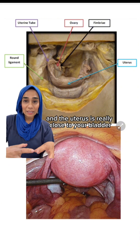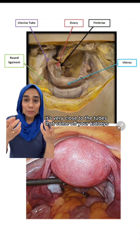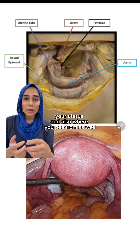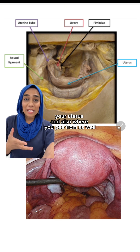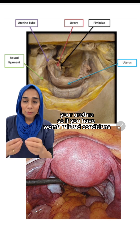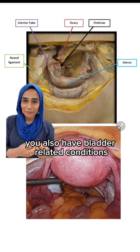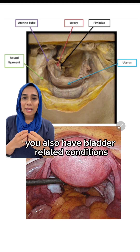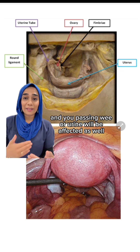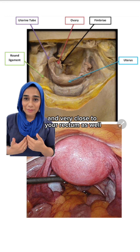The uterus is really close to your bladder, very close to the tubes that come off your kidneys — your ureters — and also where you pee from, your urethra. So if you have womb-related conditions, you will also have bladder-related conditions, and passing urine will be affected as well.